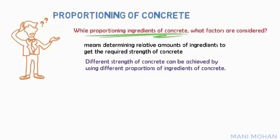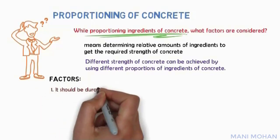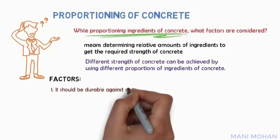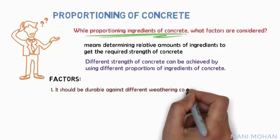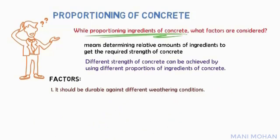While deciding the proportion of ingredients for the required strength of concrete, the following points shall be considered. First, it should be durable against different weathering conditions like moisture changes, atmospheric gases, temperature changes, etc. It should be able to resist wear safely and should not disintegrate.